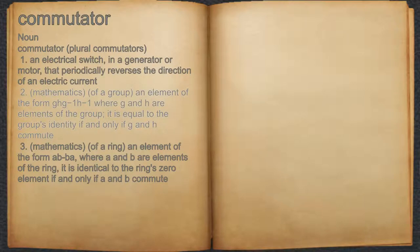2. Mathematics, of a group: an element of the form GHG⁻¹H⁻¹, where G and H are elements of the group. It is equal to the group's identity if and only if G and H commute.